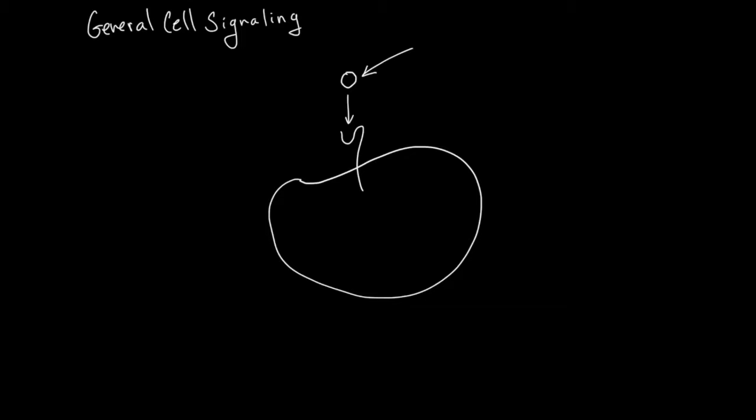Hi it's Quatt and in this video I want to tell you about general cell signaling. In general signaling, a ligand comes from some other cell or food or whatever and the ligand is going to message a receiving cell.